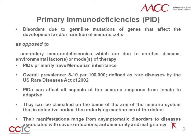This is in contrast to secondary immunodeficiencies that are the consequence of another disease, environmental factors, or certain modes of therapy. The U.S. Rare Diseases Act of 2002 defines PIDs as rare diseases, because they affect fewer than 200,000 people or approximately 1 in 1,500 individuals. While it may seem redundant, it is important to note that as a group, PIDs are far less prevalent than secondary immunodeficiencies.